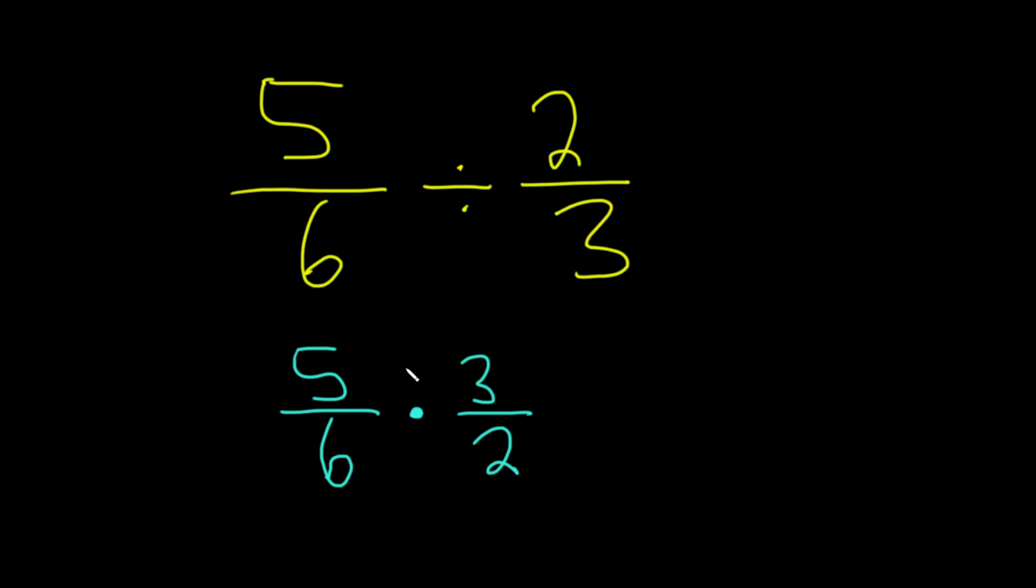Okay, very exciting stuff. So put a times and then flip it. Now we can simplify because 3 goes into 3 one time and it goes into 6 twice.